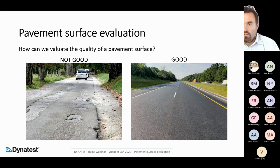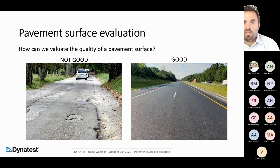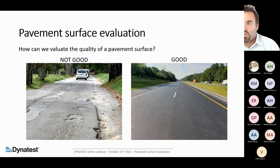Pavement surface evaluation: the first question is always how can we evaluate the quality of a pavement surface? Usually if you have two pictures, the question is which is the good road and which is not in good condition. The good condition is always associated with the better-looking picture. But how much is 'not good'? How do we define when a pavement is not in good condition? It's easy to define good condition, but not always easy to define the minimum acceptable condition. Through standards and survey techniques we define criteria to address these needs.